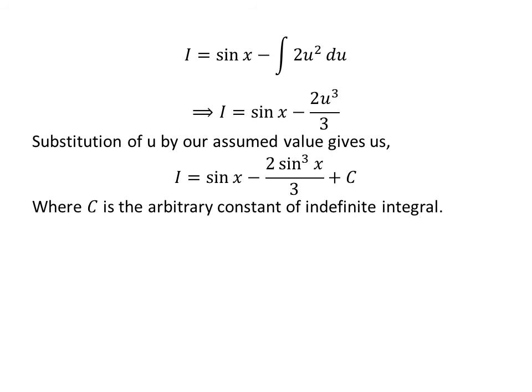Now, substituting u back by its value sine of x, the integral of the product of cosine of 2x and cosine of x is equal to sine of x minus 2 times sine cubed of x over 3, plus C. Capital C is the arbitrary constant of the indefinite integral — never forget to add this constant at the end.